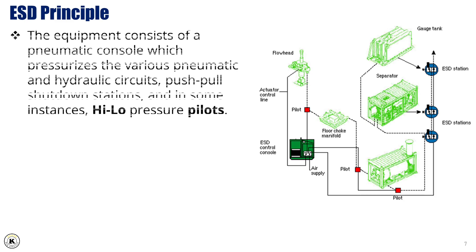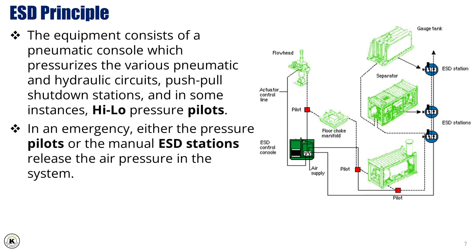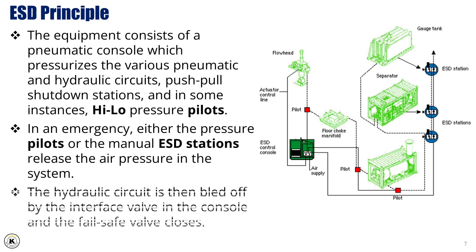The equipment consists of a pneumatic console, which pressurizes the various pneumatic and hydraulic circuits, push-pull shutdown stations, and in some instances high-low pressure pilots. In an emergency, either the pressure pilots or the manual ESD stations release the air pressure in the system. The hydraulic circuit is then bled off by the interface valve in the console, and the fail-safe valve closes.